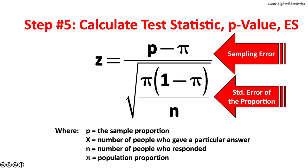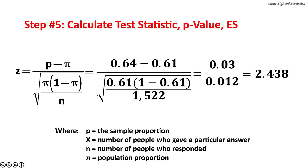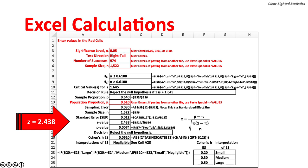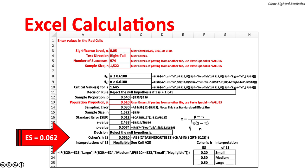Step 5: Calculate the test statistic, p-value, and effect size. The formula for the test statistic is the sample proportion minus the population proportion (sampling error) over the standard error for the proportion: the square root of the population proportion times (1 minus the population proportion), over sample size n. The value of the test statistic is 2.438. While Excel lacks a built-in function for this test, a worksheet can easily be created. The critical value for a right-tail Z test at 5% significance is 1.645. The p-value is 0.0074, or 0.74%. There is sufficient evidence to reject the null hypothesis at 5% and 1% significance levels. Cohen's H effect size is 0.062.